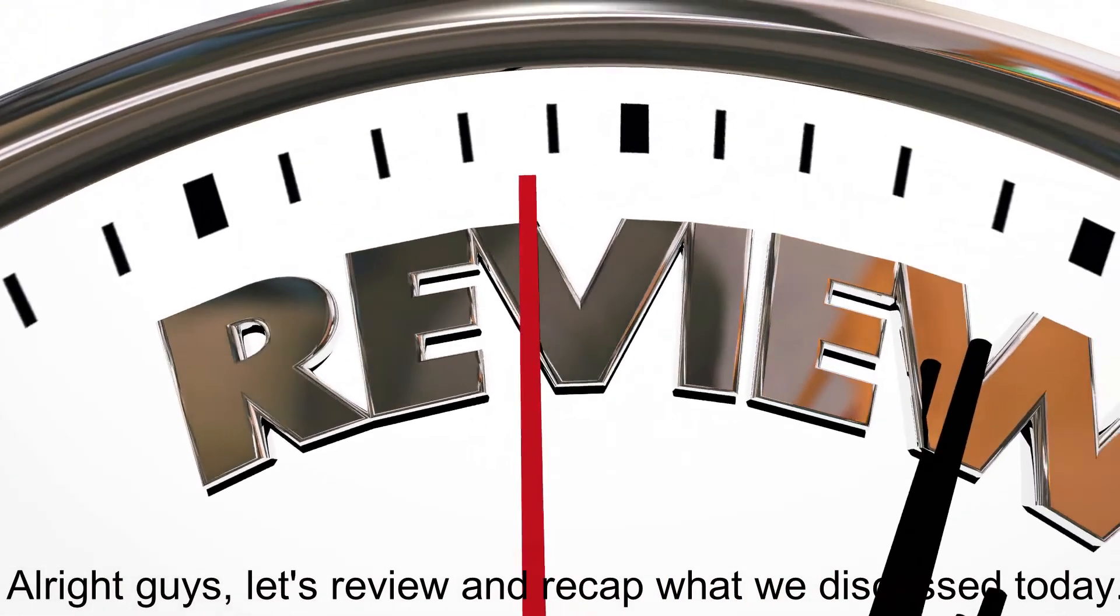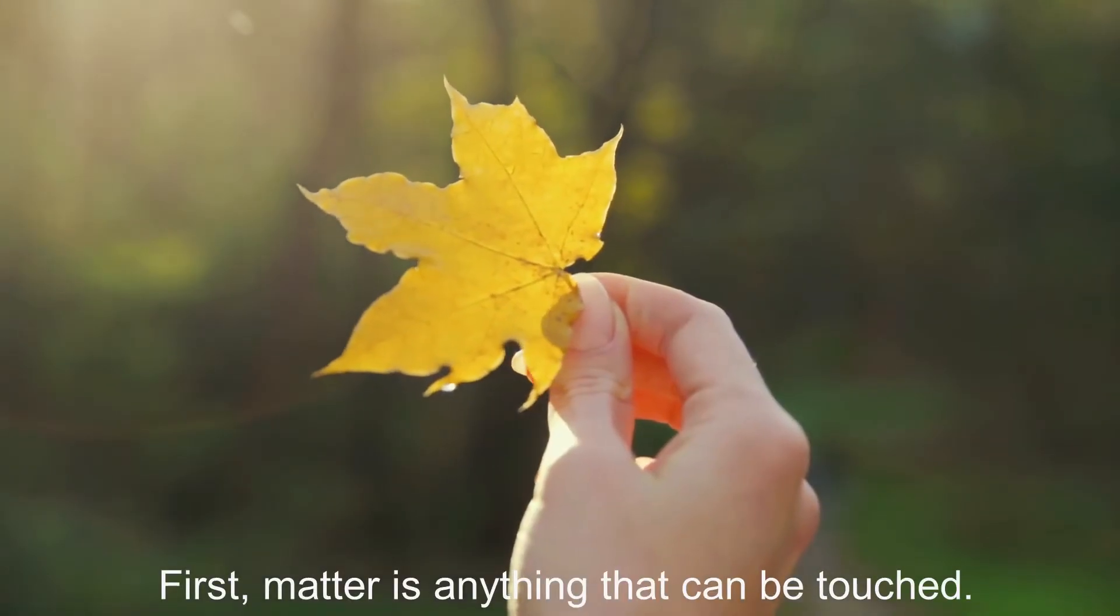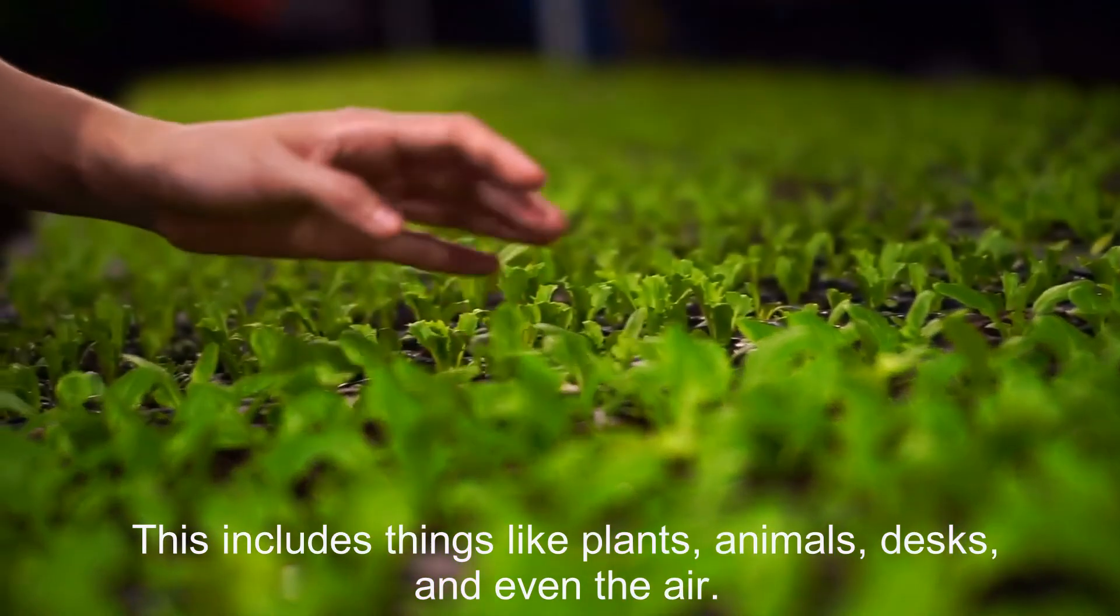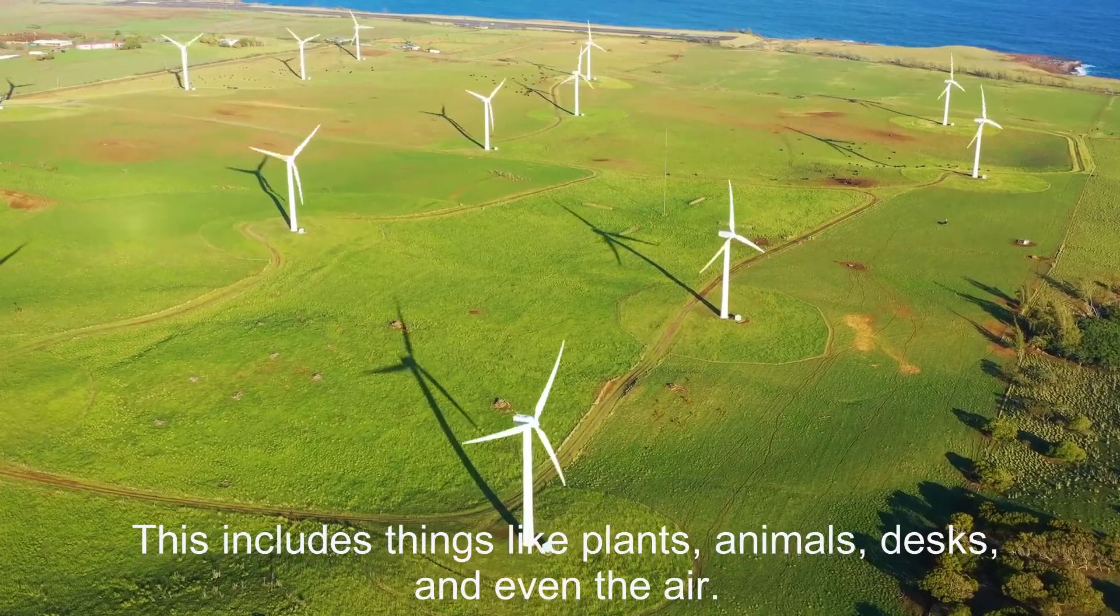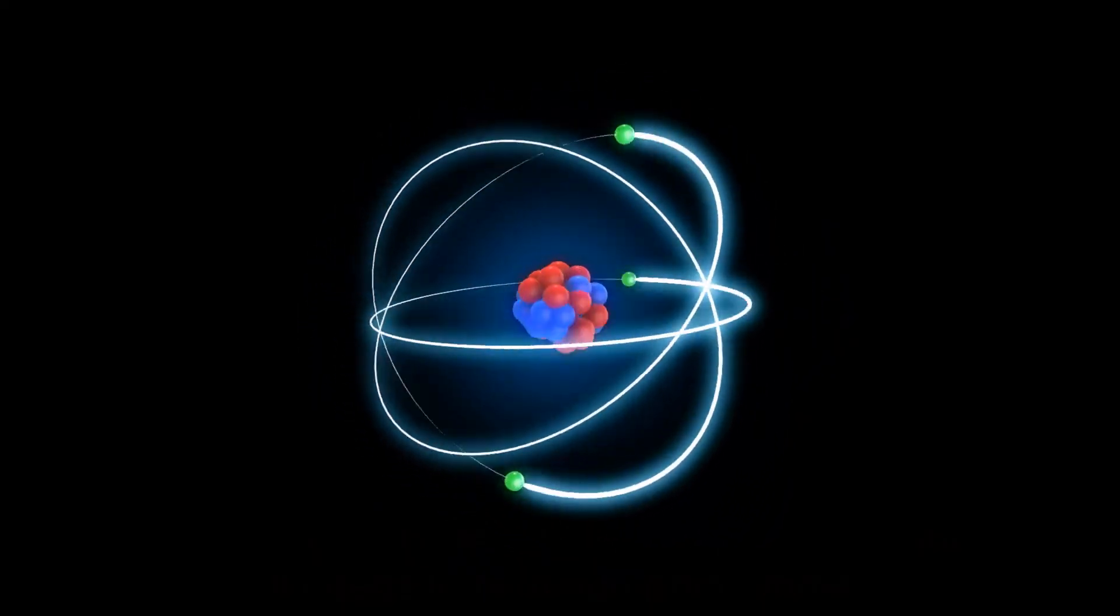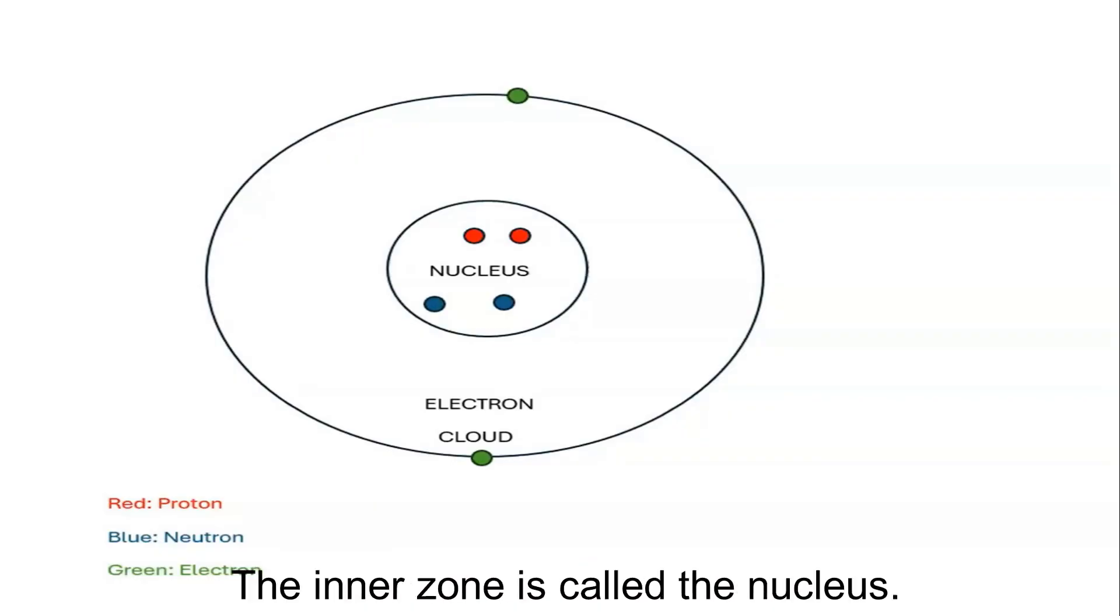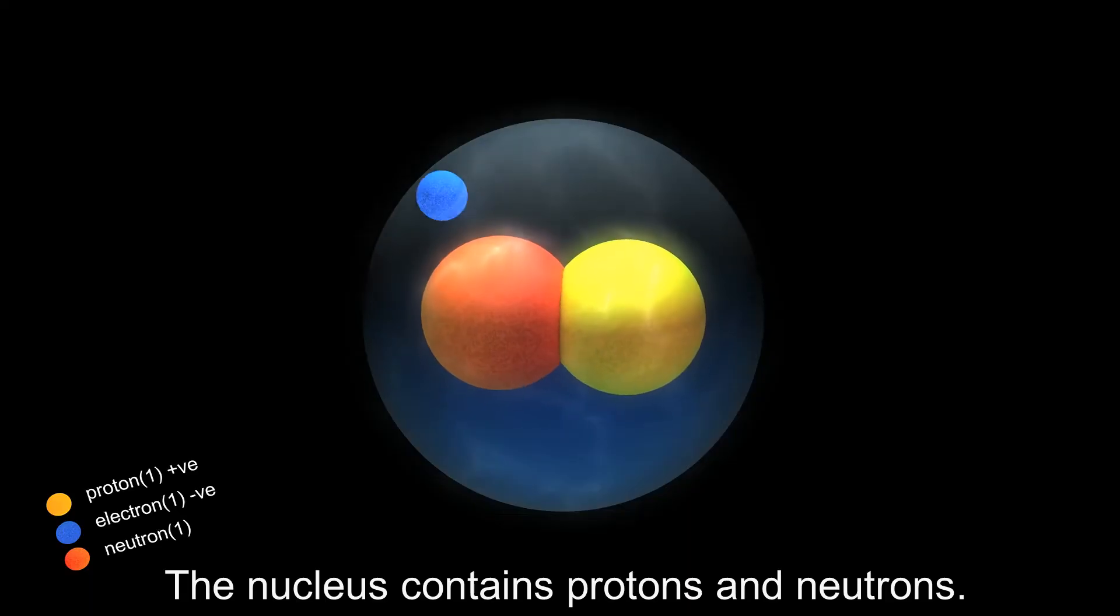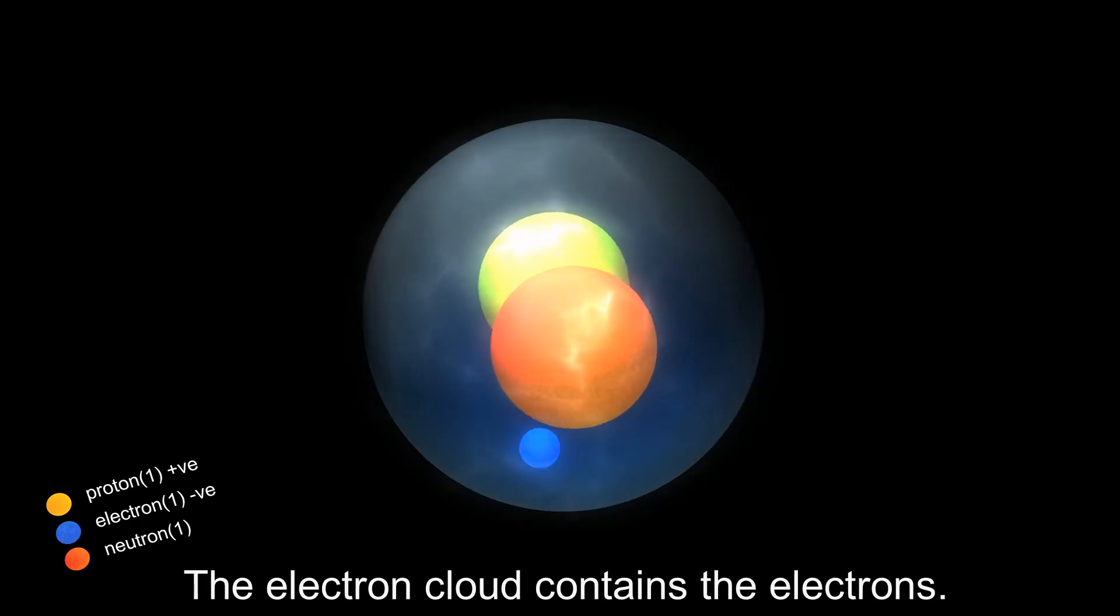All right guys, let's review and recap what we discussed today. First, matter is anything that can be touched. This includes things like plants, animals, desks, and even the air. Atoms are the building blocks of matter. In order to get anything that is touchable, it needs to be made from atoms. Atoms have two zones. The inner zone is called the nucleus. The outer zone is called the electron cloud. The nucleus contains protons and neutrons. The electron cloud contains the electrons.